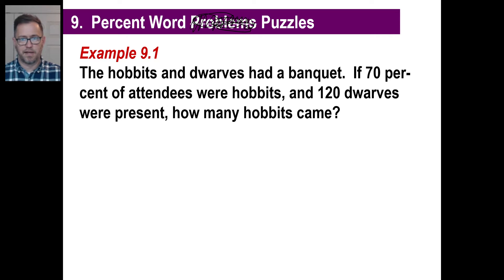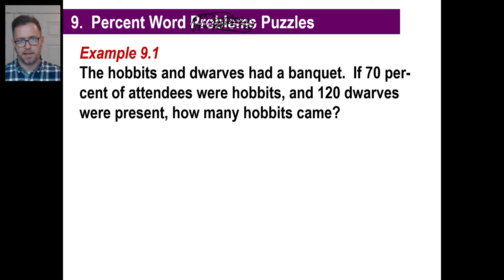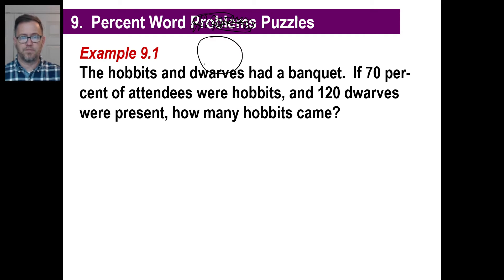The hobbits and dwarves had a banquet. If 70% of attendees were hobbits and 120 dwarves were present, how many hobbits came? Always draw a picture if you're having trouble visualizing this. If you're a nasal learner, don't forget to bake something and sniff it before you do these problems — something maybe having to do with banquets.